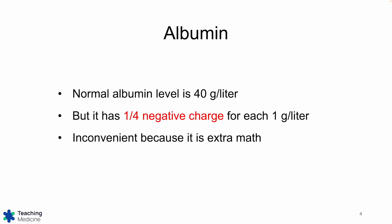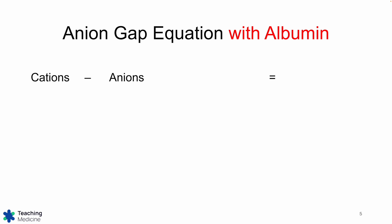Albumin is a contributor to the anion gap, so we have to pay attention to it. The normal level is 40, and for every 1 gram per liter, albumin carries a one-quarter negative charge. This is fairly inconvenient for us because it just generates extra math.